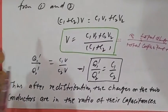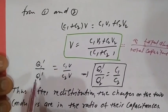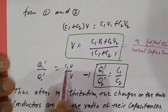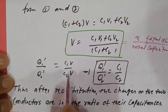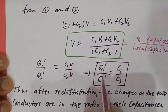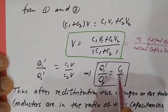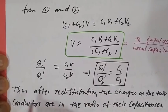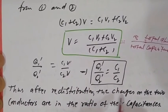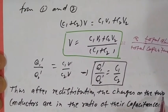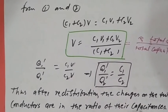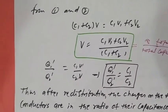After redistribution, Q1' / Q2' = C1V / C2V. The V cancels, giving Q1' / Q2' = C1 / C2. Thus, after redistribution, the charges on the two conductors are in the ratio of their capacitances.